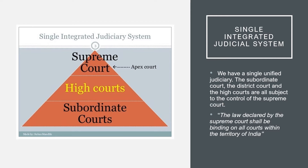We have a single unified Judiciary. The Subordinate Courts, the District Courts, and the High Courts are all subject to the control of the Supreme Court. The law declared by the Supreme Court shall be binding on all courts within the territory of India. The Supreme Court is the final arbiter of laws — the law stated by the Supreme Court will be final for all other courts.